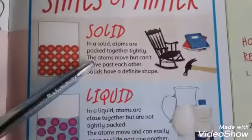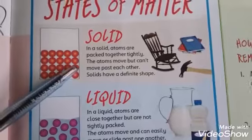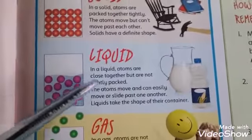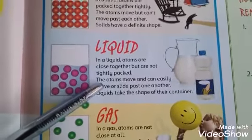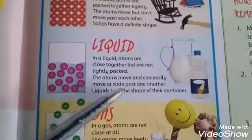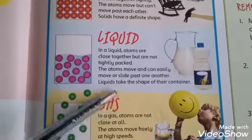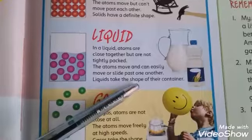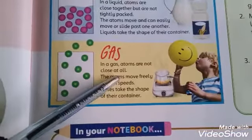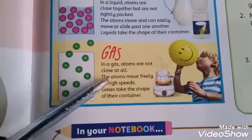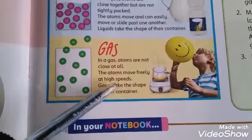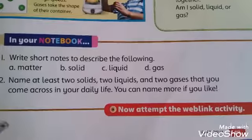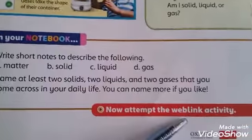Now, a summary of the states of matter — solid, liquid, and gas. In solids, atoms are tightly packed and cannot move, so they have a definite shape. In liquids, atoms are not tightly packed, so they move easily and take the shape of their container. In gases, atoms are not close at all, they move freely, and take the shape of their container.